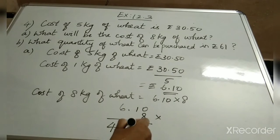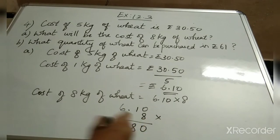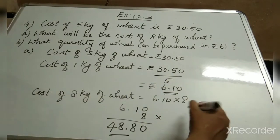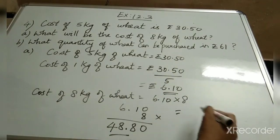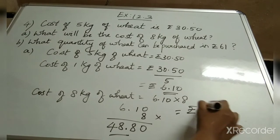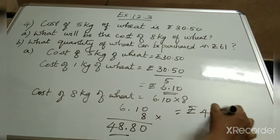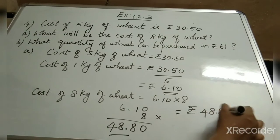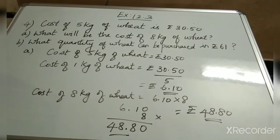The decimal point is placed here, counting 2 numbers from the right. So the cost of 8 kilograms of wheat is rupees 48.80. Clear children?